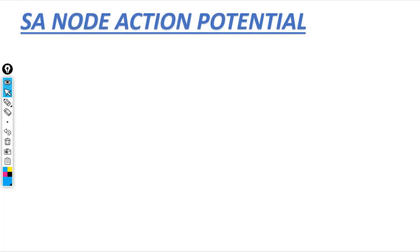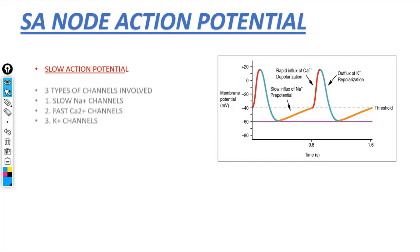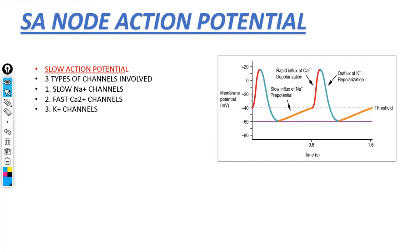SA Node Action Potential. Here is the diagram of SA Node Action Potential. It is also known as Slow Action Potential. Three types of channels are involved: slow sodium channels for resting potential, fast calcium channels for depolarization, and potassium channels for repolarization.